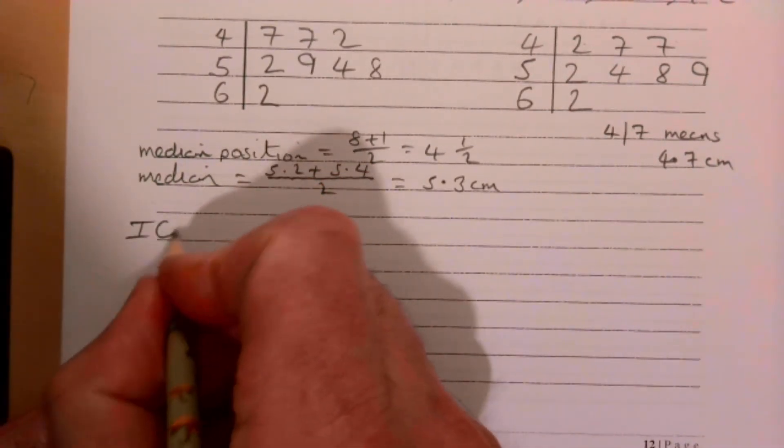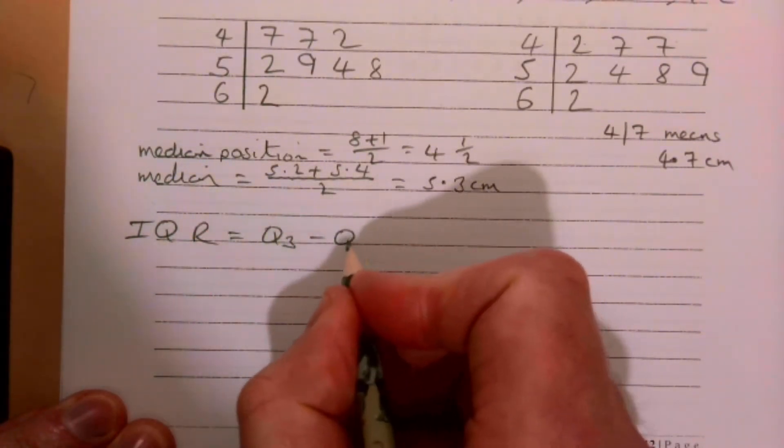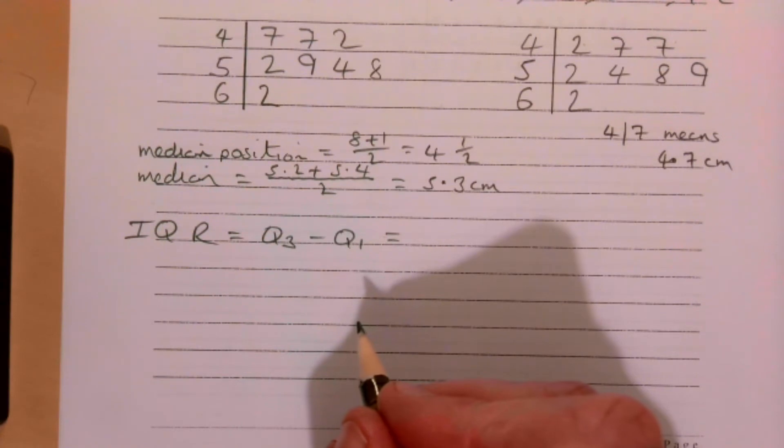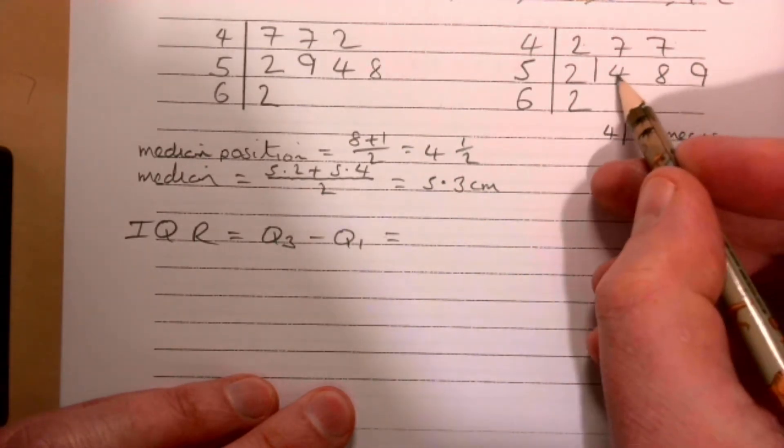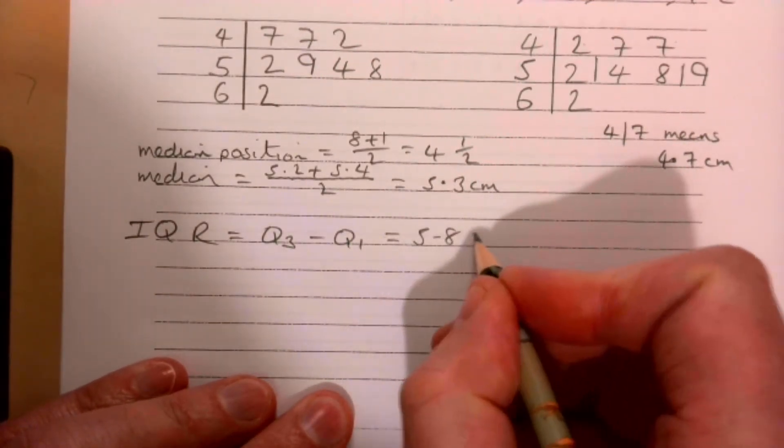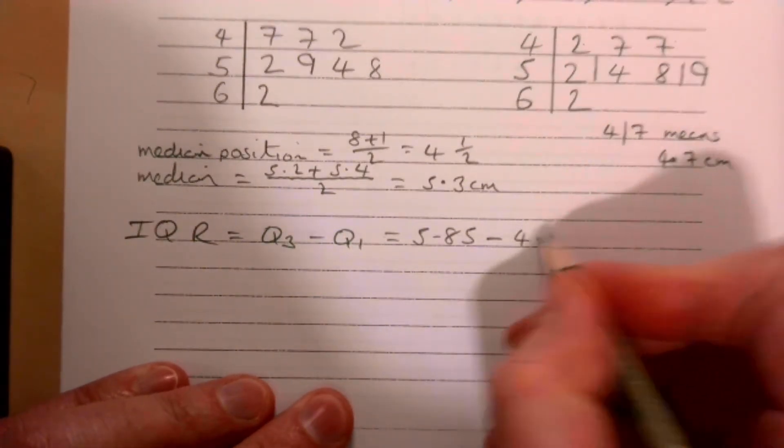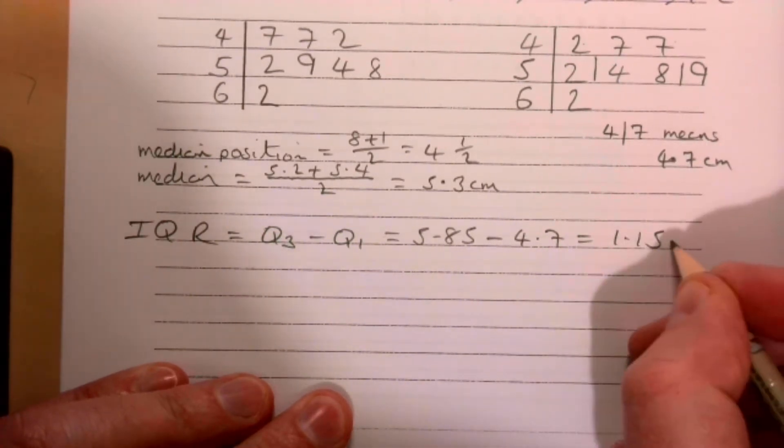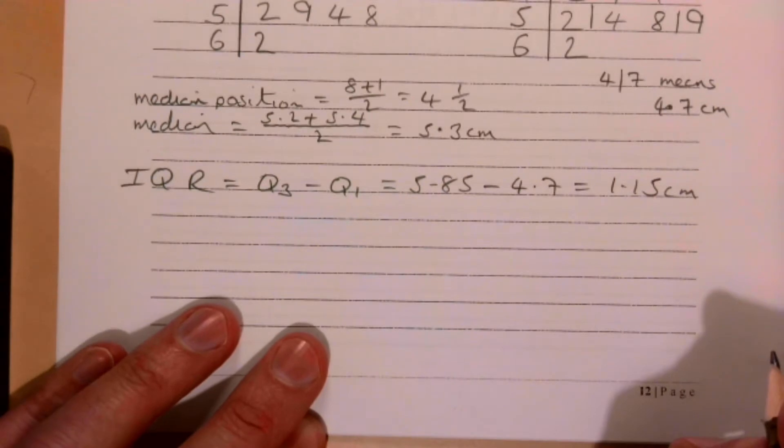Interquartile range is equal to Q3 take away Q1. Q3 is halfway through the upper four pieces of data, so 5.85, take away Q1, which is halfway in the lower half, so 4.7. That gives us 1.15 centimeters.